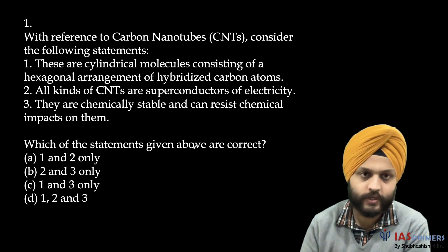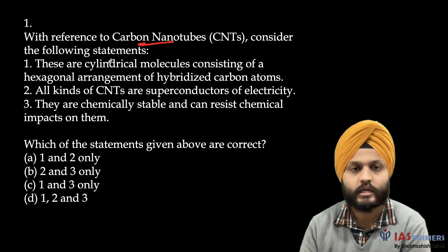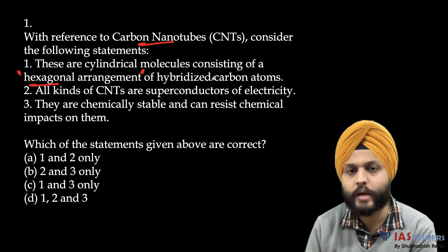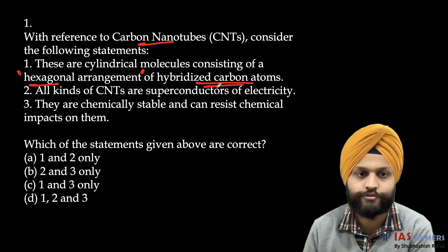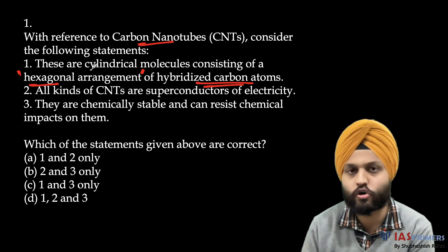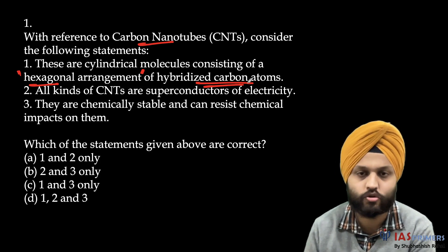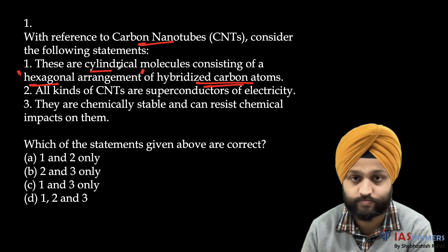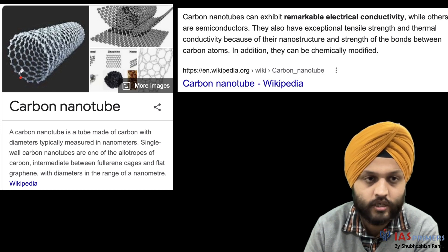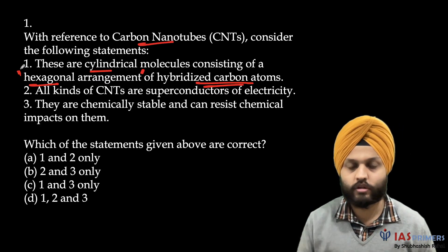Now let us do the first question: with reference to carbon nanotubes, consider the following statements. These are cylindrical molecules consisting of a hexagonal arrangement of hybridized carbon atoms. Going statement by statement — is it hexagonal or pentagonal? Looking at the image of a carbon nanotube, you can count six sides — so yes, it is hexagonal.